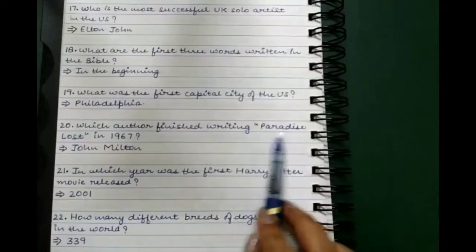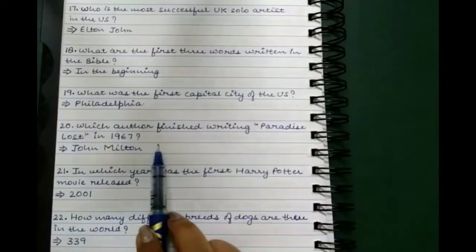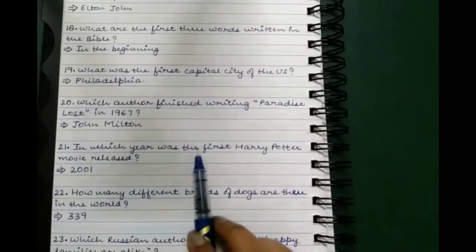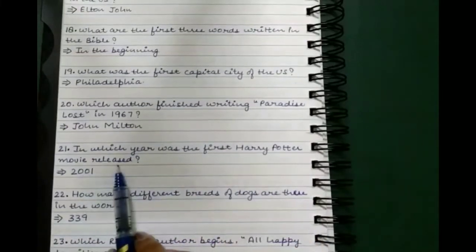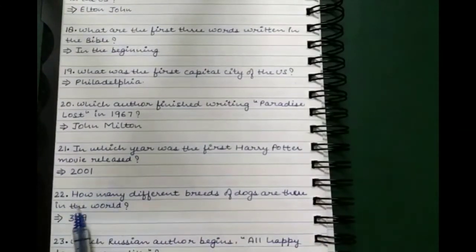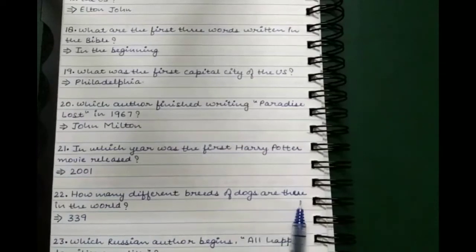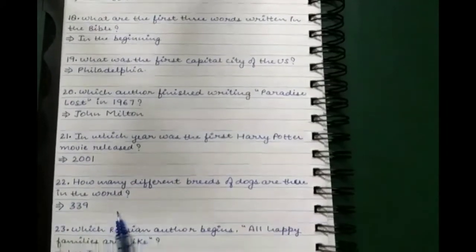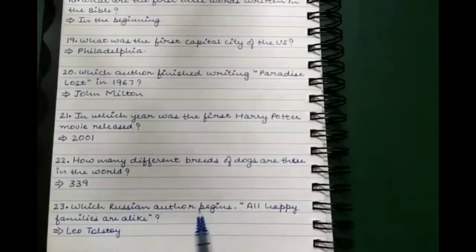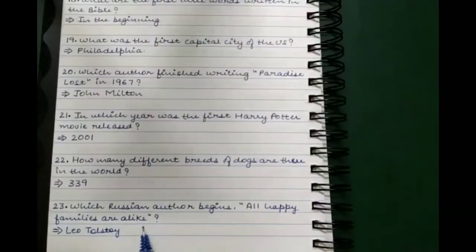What are the first three words written in the Bible? In the beginning. What was the first capital city of the U.S.? Philadelphia. Which author finished writing Paradise Lost in 1967? John Milton. In which year was the first Harry Potter movie released? 2001.